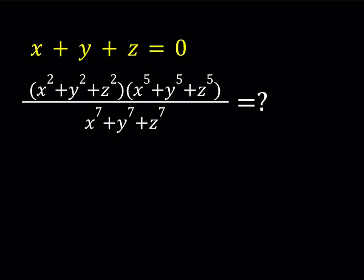Hello everyone. In this video we're going to be simplifying an algebraic expression. We have x plus y plus z equals 0, and we're supposed to simplify this expression where we have the sum of second powers, sum of fifth powers, and sum of seventh powers. So we're going to be getting a numerical expression at the end. Let's see what happens.